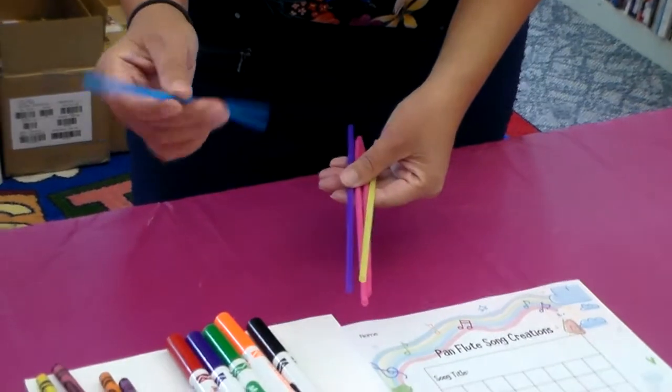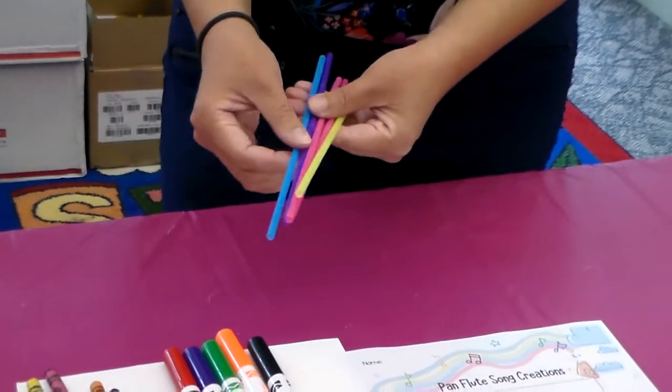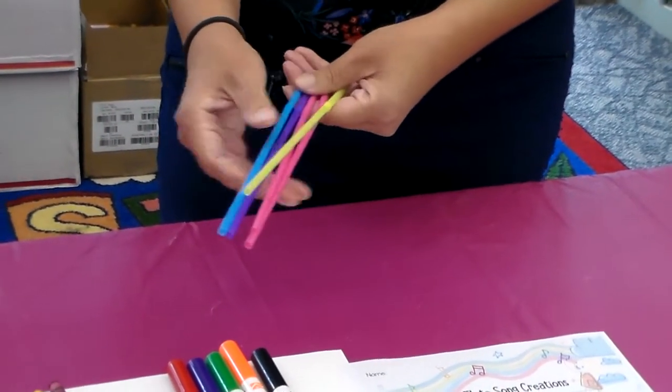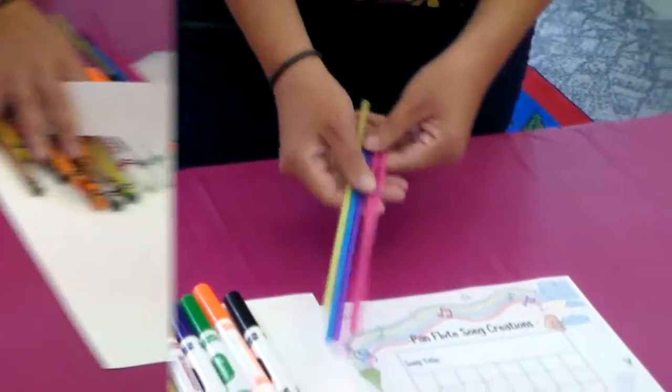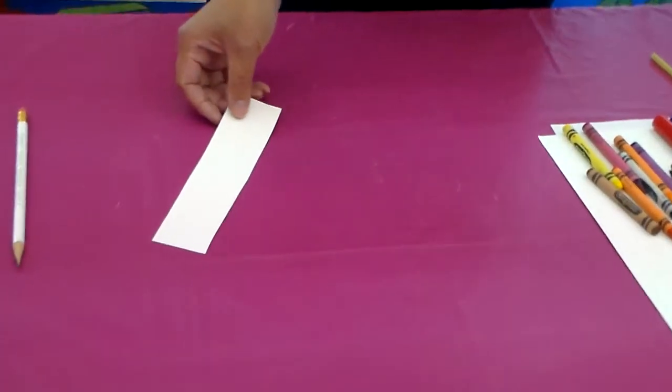I have these thin one but if you have the thicker one, if you're drinking like a boba or a jelly, they have like a thicker diameter of straw then you can use them too. And we're going to work with our construction paper.